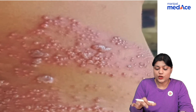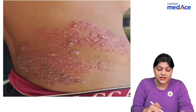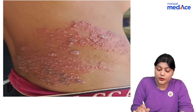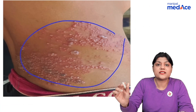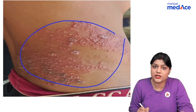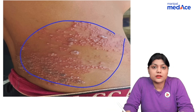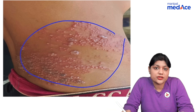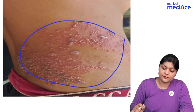This is a case of herpes zoster, in which there is presence of grouped vesicles on an erythematous base in a dermatomal distribution. The patient also complains of excruciating pain which comes in pulses.